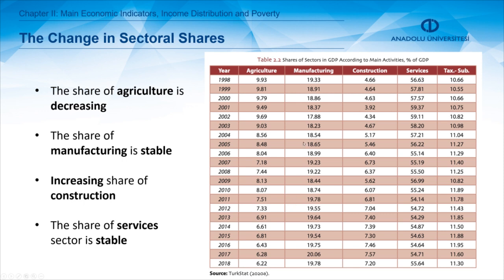In terms of manufacturing, we have a stable share of GDP — it started with 19.33 percent and ended with 19.78 percent. An increasing trend for construction is seen, which starts with 4.66 percent and ends with 7.20 percent.